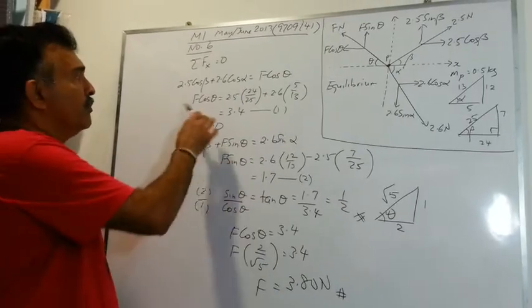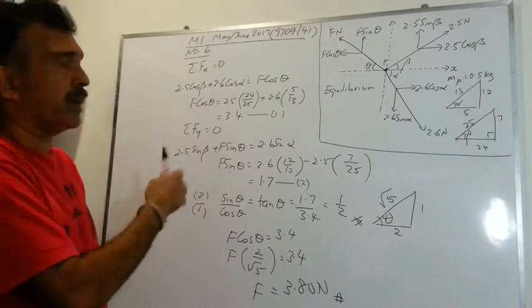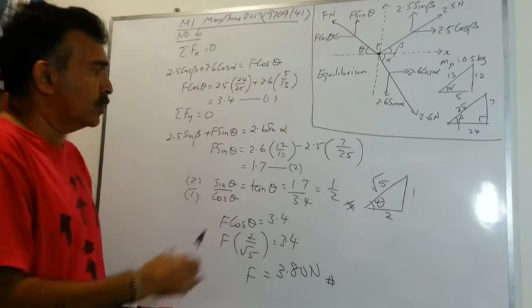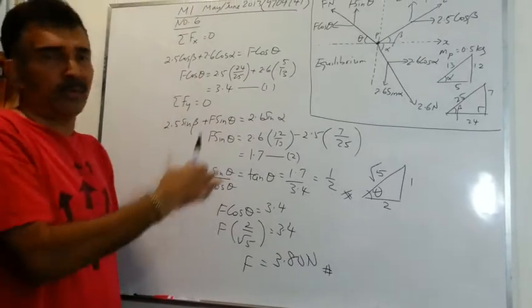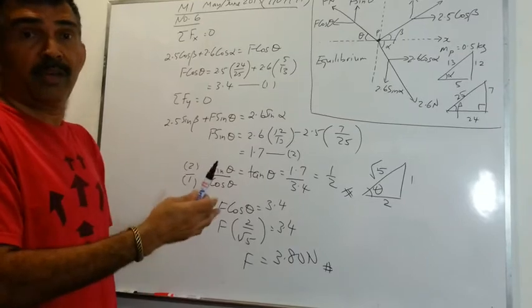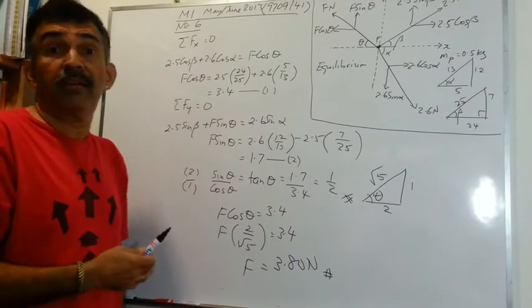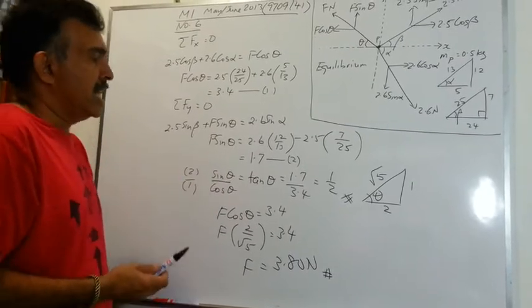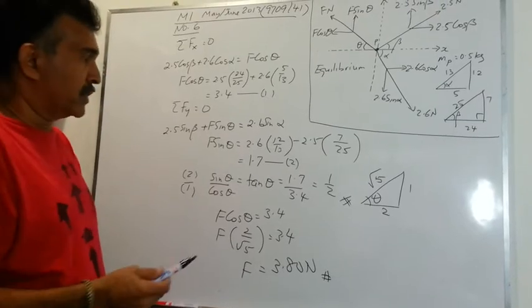One other way for you to do it would be to take equation 1 square both sides, take equation 2 square both sides and you add them up. You are going to get an equation which involves sin squared theta plus cos squared theta which is 1 and you can still find the value of F. Okay we are done with the first part.